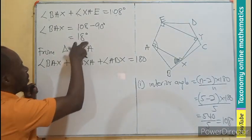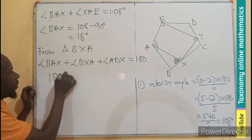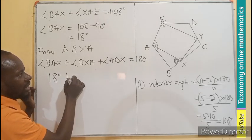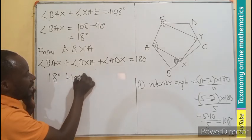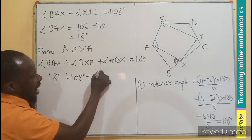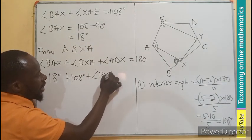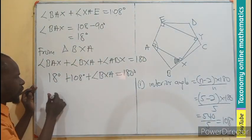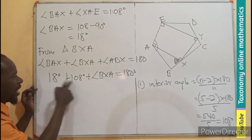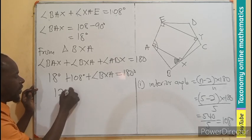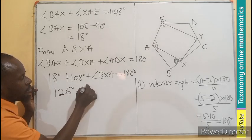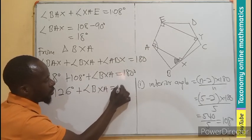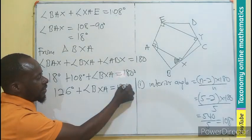This angle is known as 18 degrees. This is the angle you are asked to find. So let me bring this one as 108 degrees plus the angle BXA, as you'll be having 180 degrees. This is going to be 126, right? Plus the angle BXA, equals to 180 degrees.